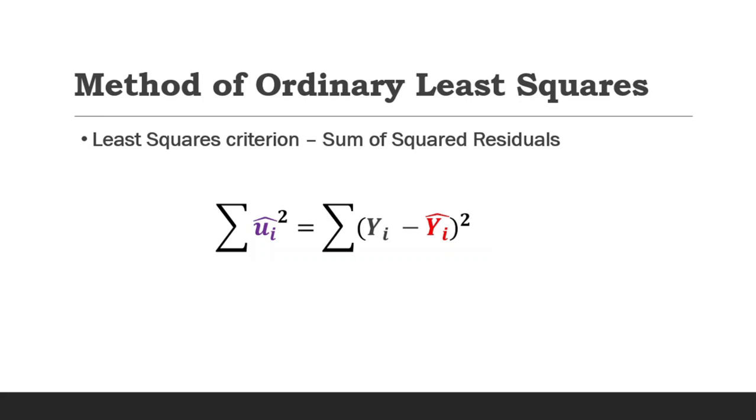Opening the term yi hat, we have sigma ui squared equals sigma yi minus beta 1 hat minus beta 2 hat xi squared.